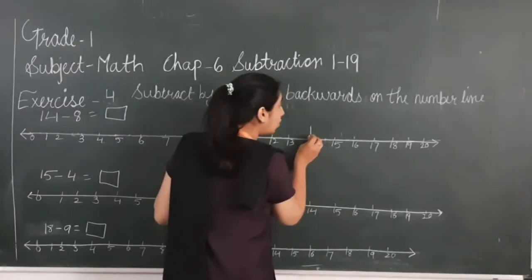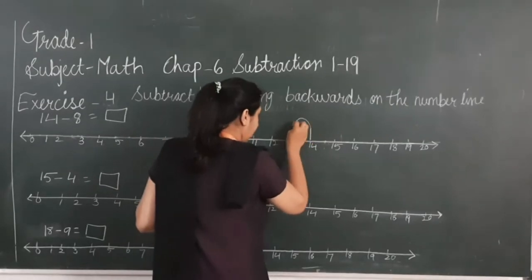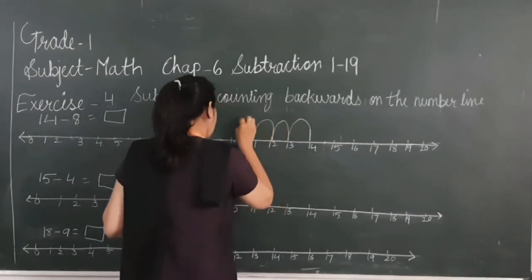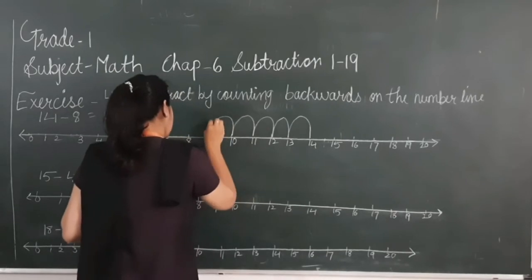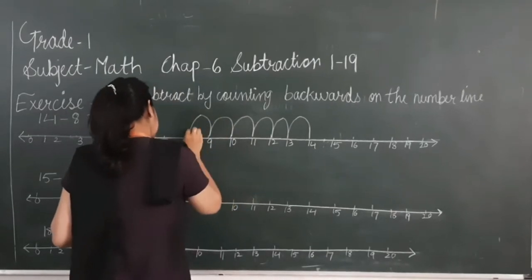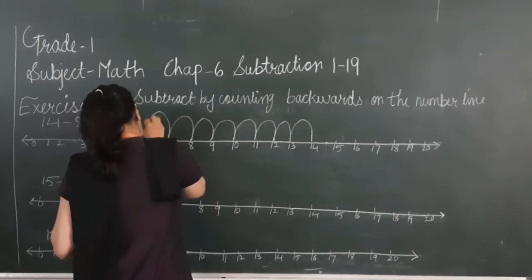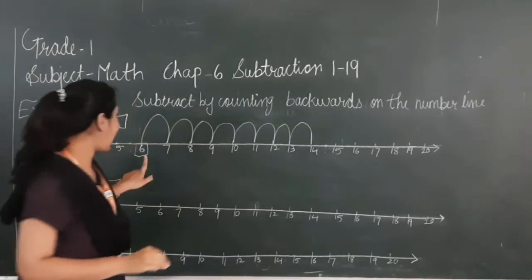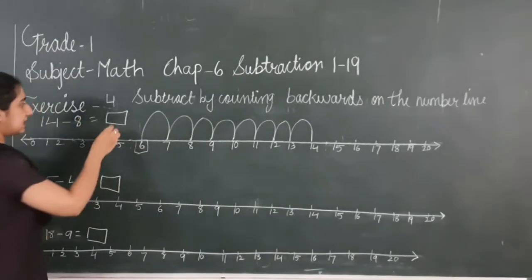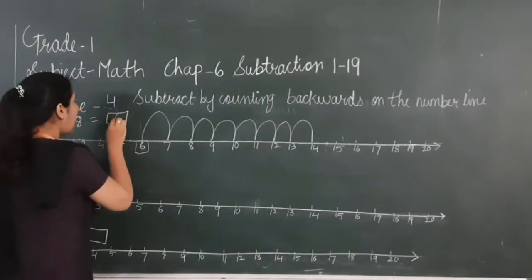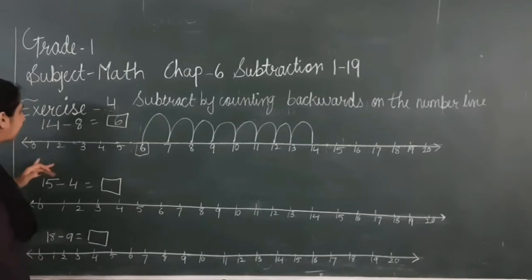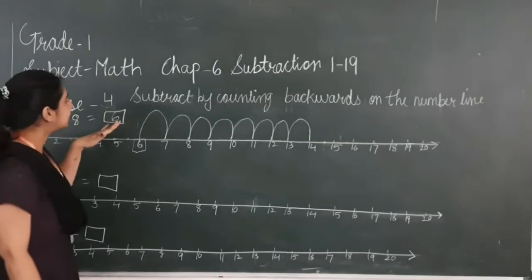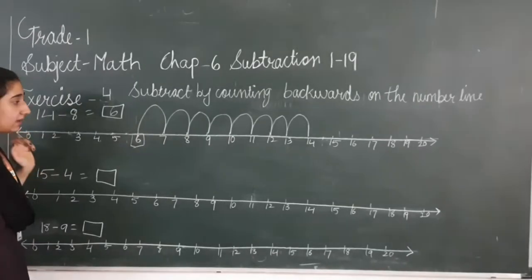Backwards: 1, 2, 3, 4, 5, 6, 7, 8. So where do I stop? At 6. 6 is the answer. When I subtract 8 from 14, we get 6 as the answer. Students, do not stop at 8 — we have to walk 8 steps from backward.